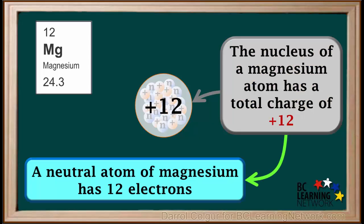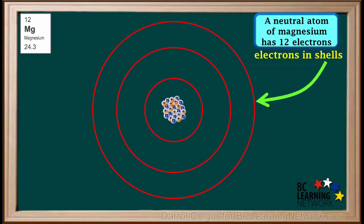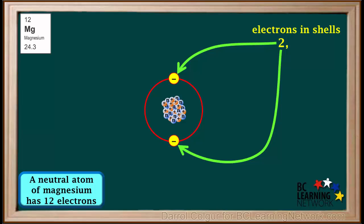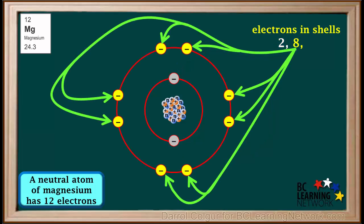Electrons have a negative charge, so a neutral atom of magnesium must have 12 electrons to balance the positive 12 charge on the nucleus. Here we'll use the Bohr model of the atom, where electrons occupy shells around the nucleus. The first shell has 2 electrons, the maximum number it can hold. The second shell has 8 electrons, the maximum number it can hold.